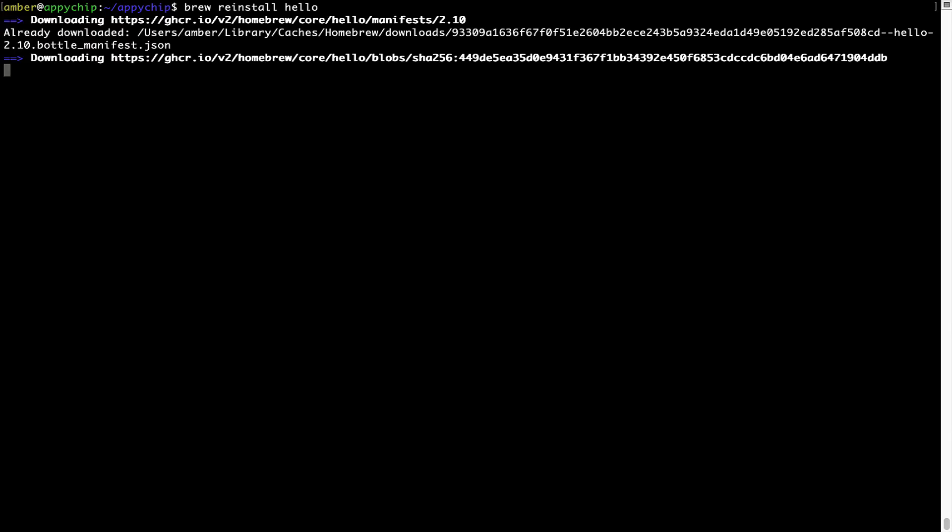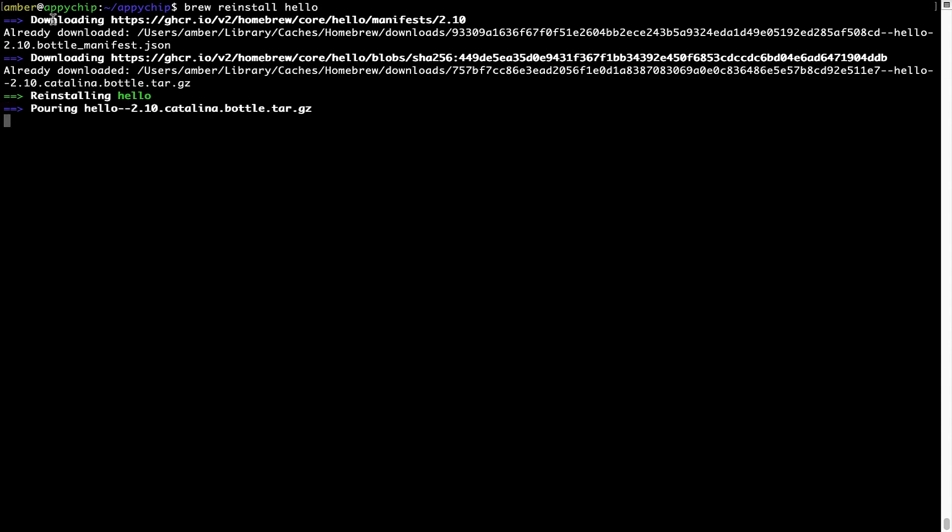If in future any app installed using brew stops working, then you can simply reinstall it using the command brew reinstall, space, the name of the program. For example, I'll try to reinstall this program called hello, which is already installed on my system. As you can see, it is downloading the program and it says reinstalling hello. And now, hello is successfully installed.